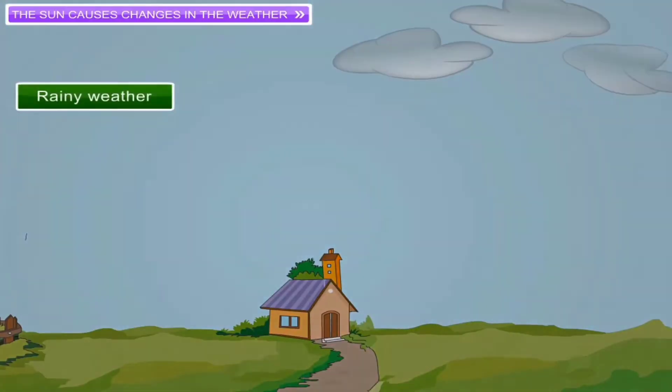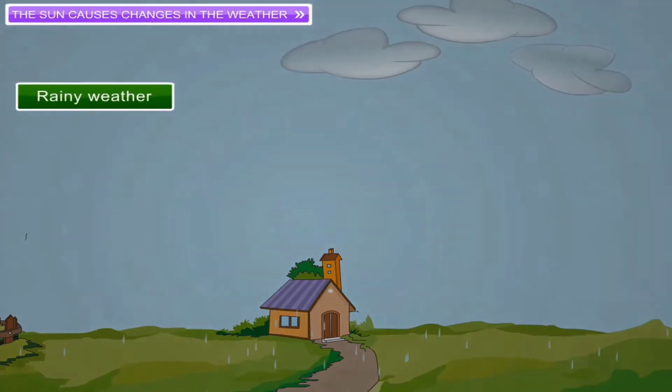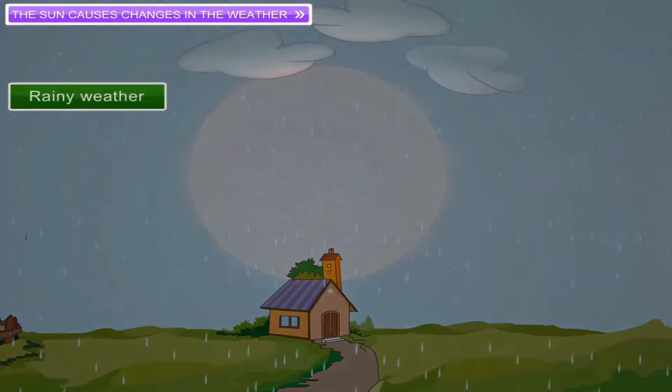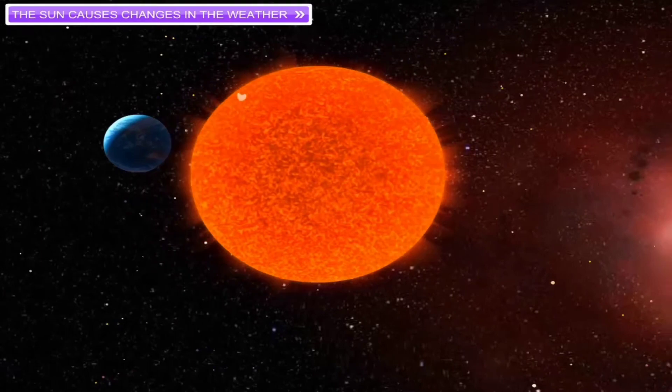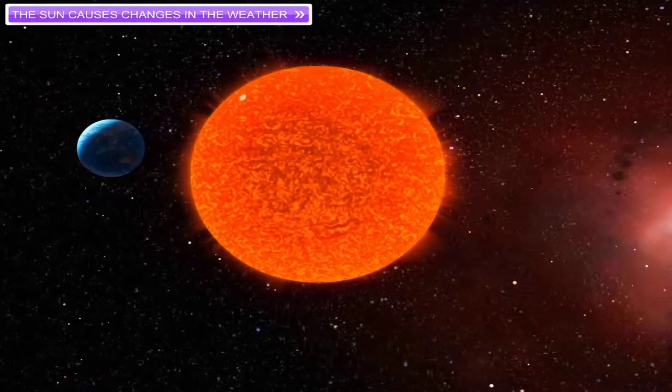If there is rain, we say that the weather is rainy today. We know heat from the sun heats up the earth's surface.